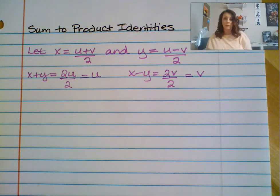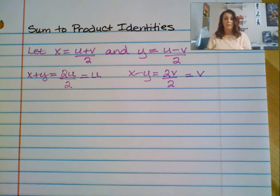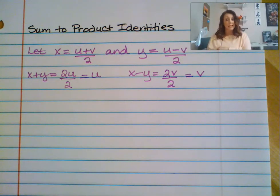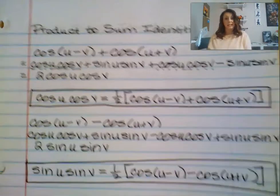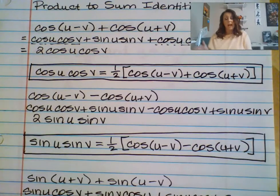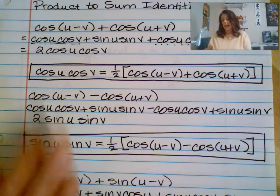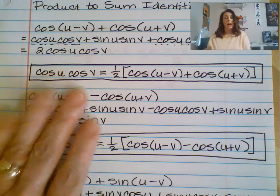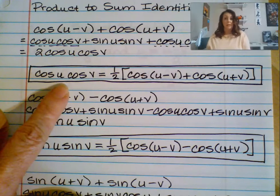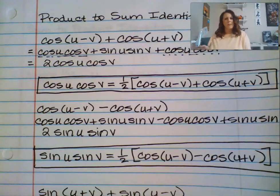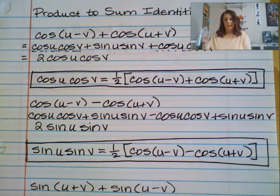Now that we've identified those variables and simplified their sums, let's talk about how the product-to-sum identities from the last video can be useful in setting up the sum-to-product identities. We're going back to that list of identities and making some substitutions. Instead of using u and v, I'm going to replace the u's with x's and the v's with y's.